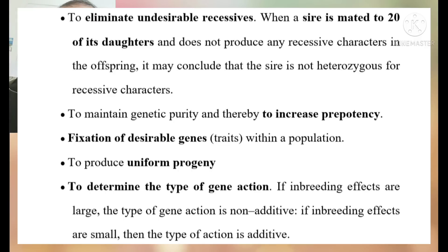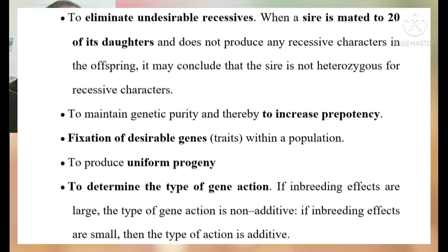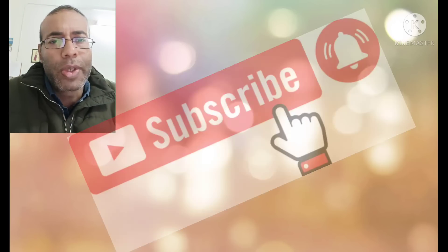In that case, the bull can be used extensively. Inbreeding is also used for increasing prepotency and for fixation of desirable traits by increasing homozygosity. It is used for producing uniform progeny, which is needed in certain research requiring large numbers of uniform animals. Inbreeding is also used for determining the type of gene action: if the inbreeding effect is very large, the gene action is non-additive; if small, the gene action is additive.